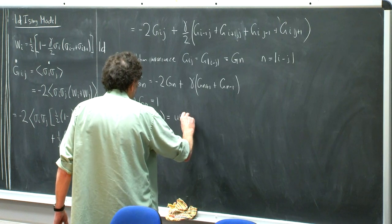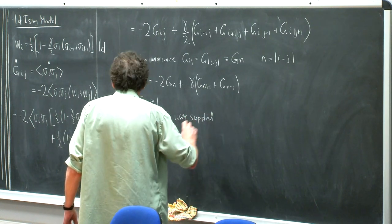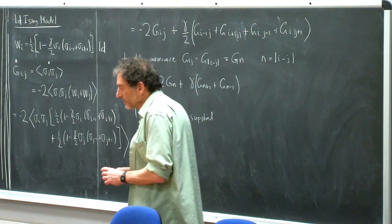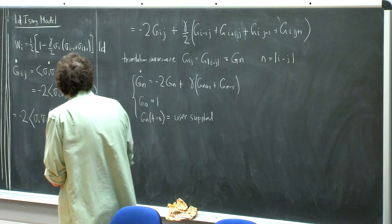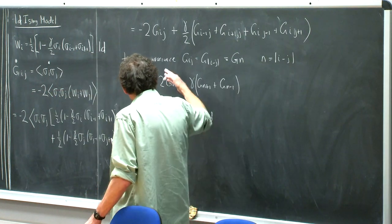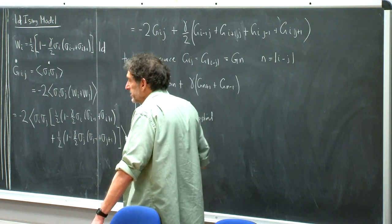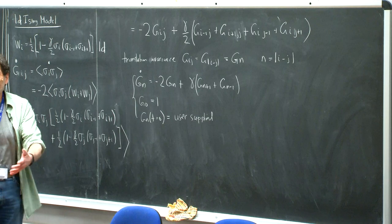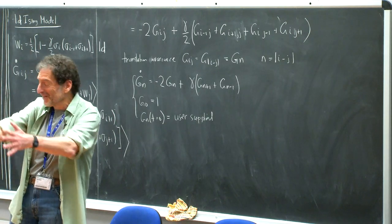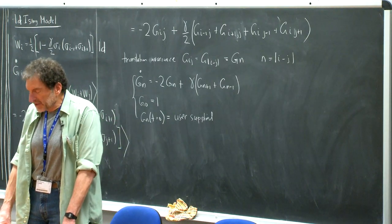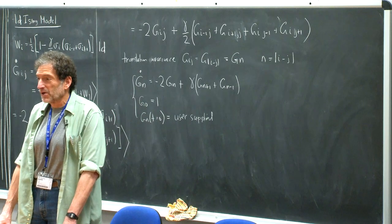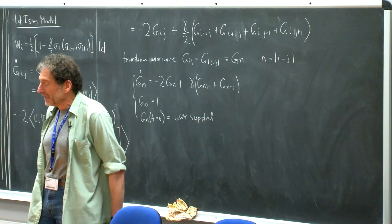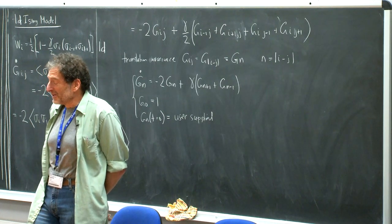The boundary condition G_0 equals 1 is crucial — it's what makes the dynamics of the two-spin correlation function different from that of the average spin. The conventional choice for the initial condition is an uncorrelated system, asking how correlations develop over time. The solution to this recursion with boundary condition is actually a rather hard problem. In fact, there's a very famous 1965 paper by Roy Glauber on the dynamics of the one-dimensional Ising model — the Glauber model — which everyone working in non-equilibrium spin systems knows.